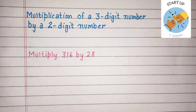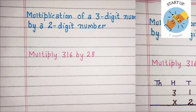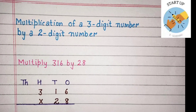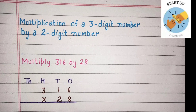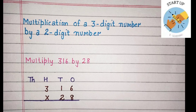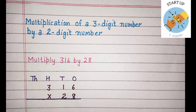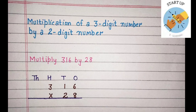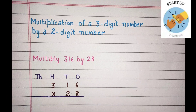Kids, let's solve an example together. Multiply 316 by 28. Now let's arrange these numbers according to its places. 6 will be written under 1's place, 1 will be written under 10's place, and 3 will be written under 100's place. The number 28: 8 will be written under 1's place and 2 will be written under 10's place. Here, 316 is the multiplicand and 28 is the multiplier.